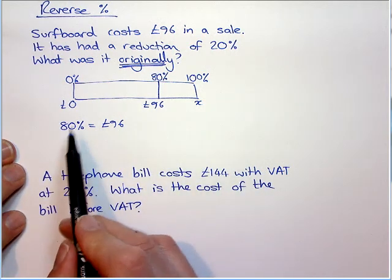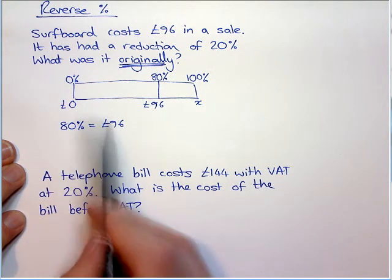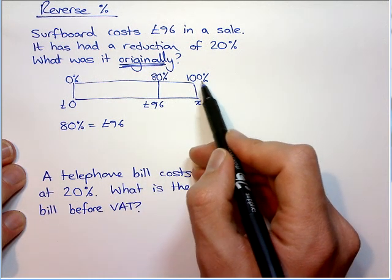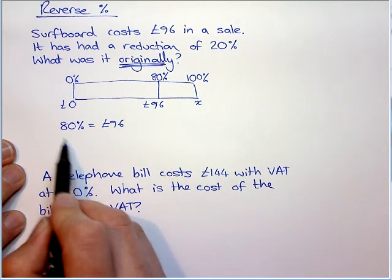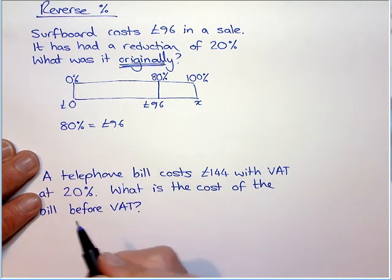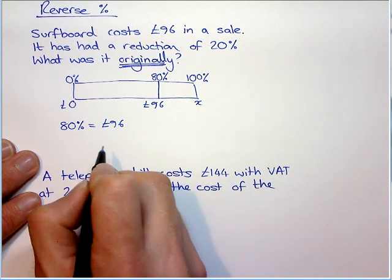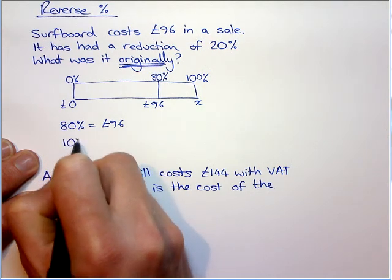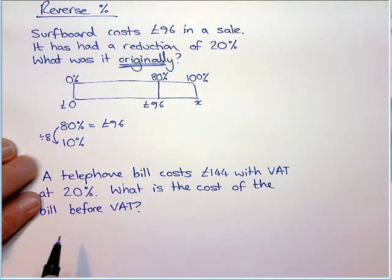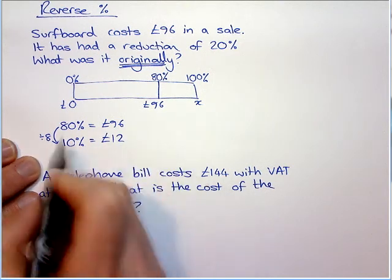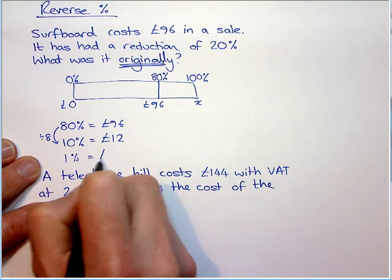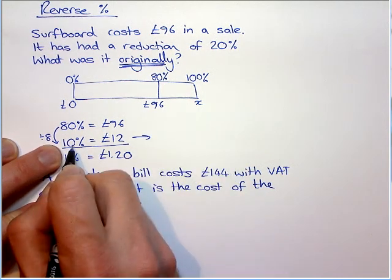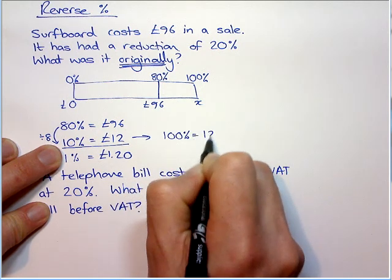With most percentage questions, it's about having the confidence to just work with this fact and make other facts until you get to the one you want. In this case, we want to find 100%. If you have a calculator, it's very simple — just divide by 80 to get 1%. Without a calculator, I can see that both numbers are in the 8 times table, so if I divide by 8, I get 10%, which is therefore £12. From here, I can go to 100% by multiplying by 10, because there are 10 tens in 100%. So 100% is therefore £120.